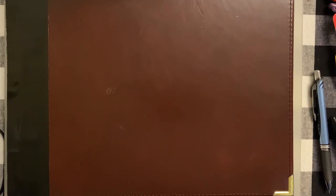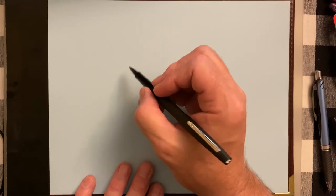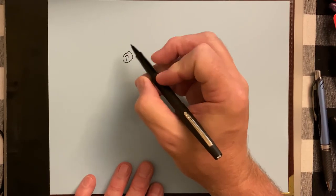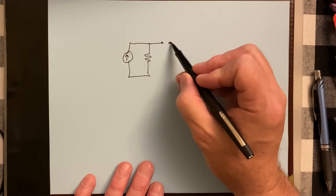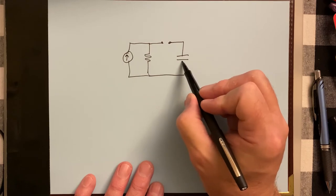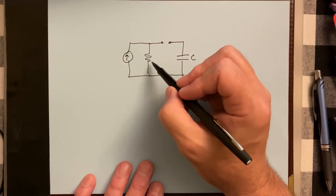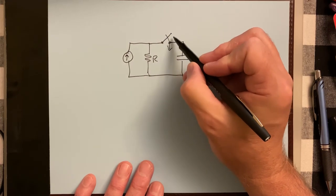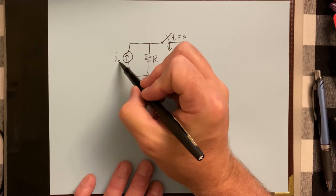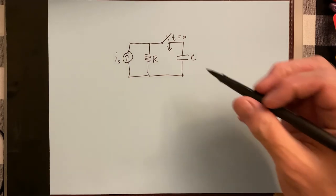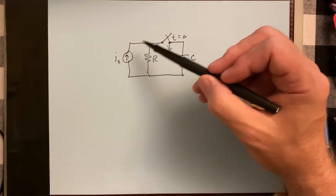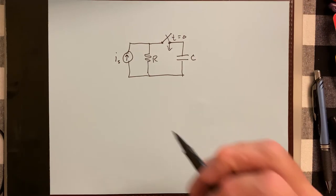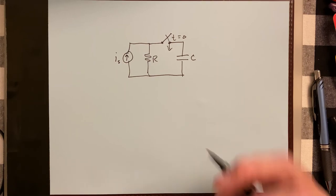Now let's look at an RC step response. We have a circuit with a current source, a resistor, a switch, and a capacitor. The switch is initially open but is closed at T equals zero, and the source is I sub S. Initially this is an incomplete circuit, so there's no energy going to the capacitor. All of the current is just over here in the resistor. You could figure out the voltage if you knew R and I sub S.